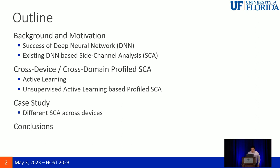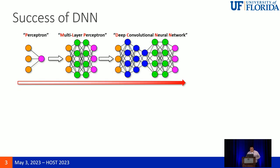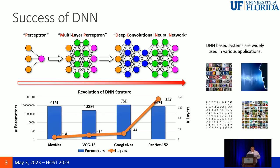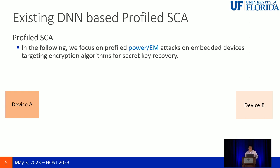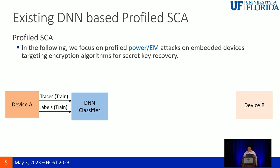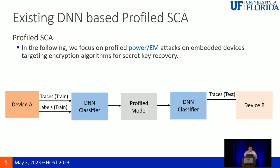For the profiled side-channel analysis procedure: the attacker has device A locally, hopes to attack device B, collects data from device A, builds the model, and after getting a few traces from device B can finish the attack. This is the existing DNN-based profiled SCA procedure, which includes challenges such as huge complexity and the need for a large amount of side-channel traces.